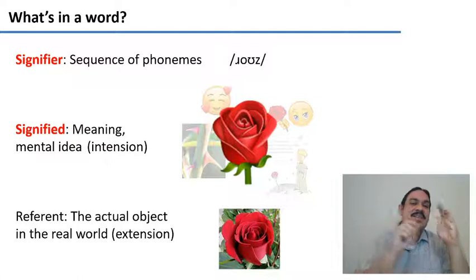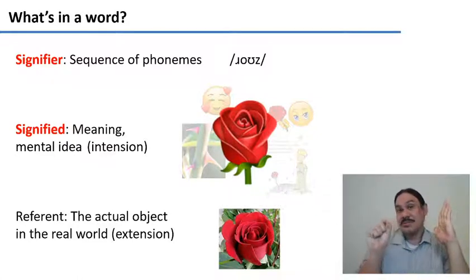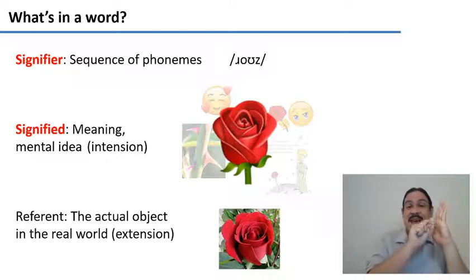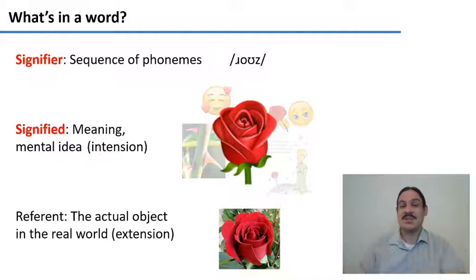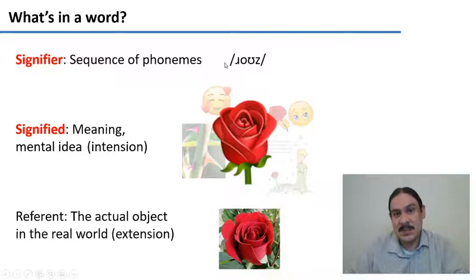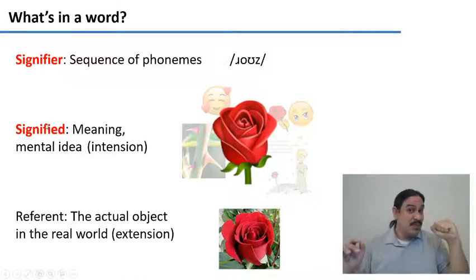The signifier is the string of phonemes that makes up a word, for example the sounds of a word in a spoken language or the visual shape of a word in a sign language. So for example this object is associated with the signifier rose. This is one part of a word.